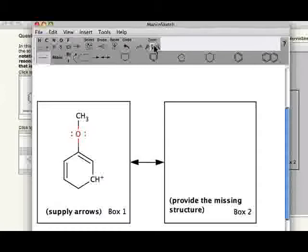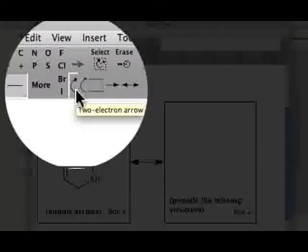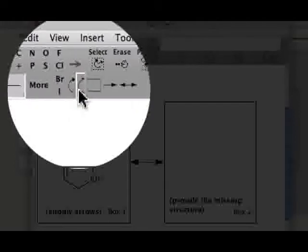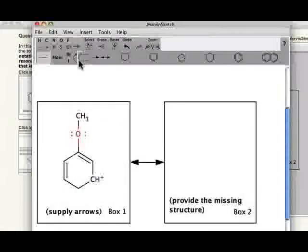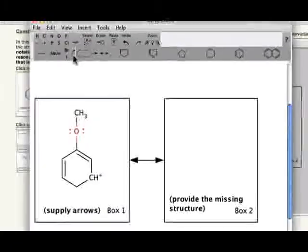In Box 1, you will always be asked to supply only electron flow arrows, so do not modify the structure of the compounds in Box 1. Rather, provide only electron flow arrows. To do this in ACE, we have to use our 2-electron arrow tool, which can be found here. Be very careful when you select this 2-electron arrow tool, because if you click the 1-electron arrow tool, ACE will not be able to interpret your electron flow arrows.